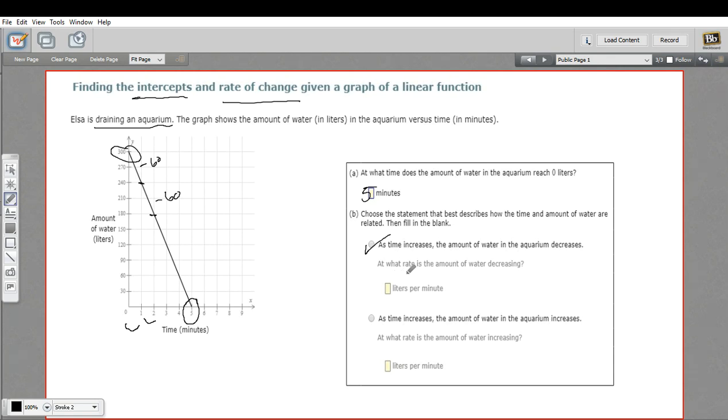And then it says, at what rate is the amount of water decreasing? And what we found is that every minute it goes down 60. So this is a negative 60. Well, actually, they're asking what amount decreases. So we don't need the negative sign on there. It's 60 liters per minute.